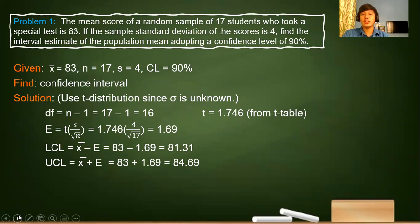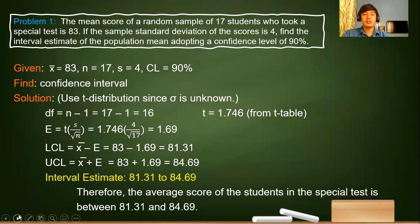You can check using your calculators. So the interval estimate is 81.31 to 84.69. Therefore, the average score of the students in the special test is between 81.31 and 84.69.